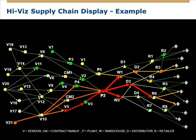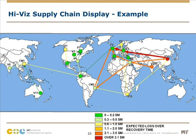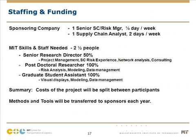This is the kind of picture we have in mind — and we want to be able to toggle from this over to a map-based display of the same thing. Sponsoring companies will need to provide supply chain analytical support and some senior management involvement. MIT will contribute a senior research director, graduate students, and postdocs. The costs will be split between the participating companies, and the methods and tools will be transferred to sponsors at the end of each year.